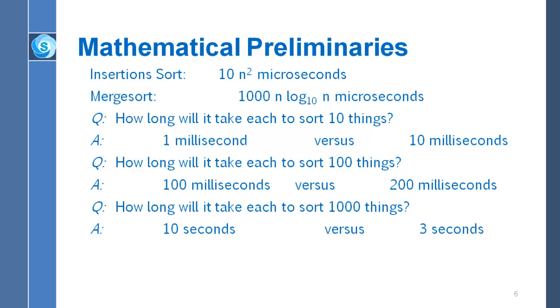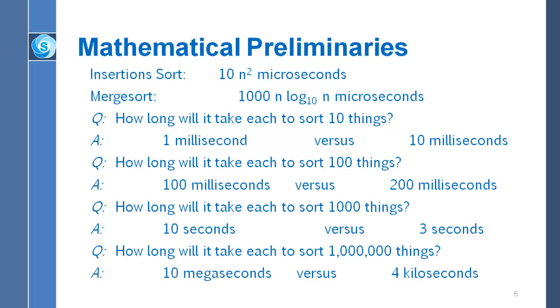And to really hammer this home, what happens if we try to sort a million things? With n equal to a million, it turns out that insertion sort takes 10 megaseconds while merge sort only requires 4 kiloseconds. So 10 megaseconds is 10 million seconds, whereas 4 kiloseconds is 4,000 seconds. Obviously, merge sort is going a lot faster than insertion sort. And I pulled out a calculator and discovered that 10 megaseconds is approximately 4 months, whereas 4 kiloseconds is approximately an hour. So merge sort is doing in one hour what insertion sort is taking 4 months to do.